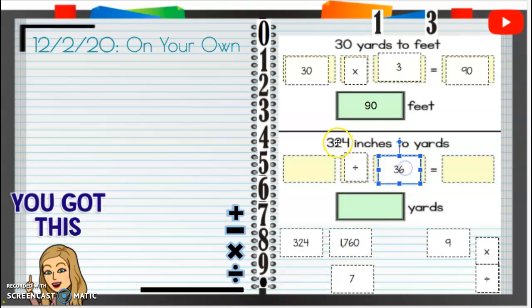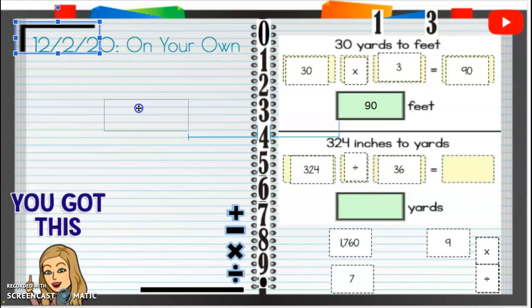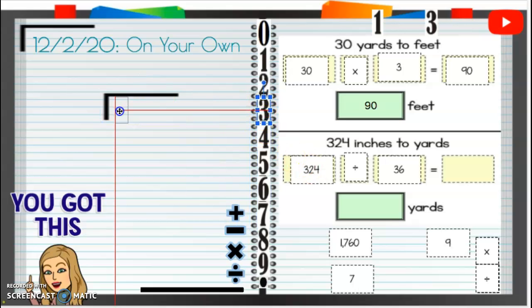So we have 324, and we're going to divide that by 36. If I take 324, that's going to be on the inside as our dividend. 324, and we're going to divide that by 36.